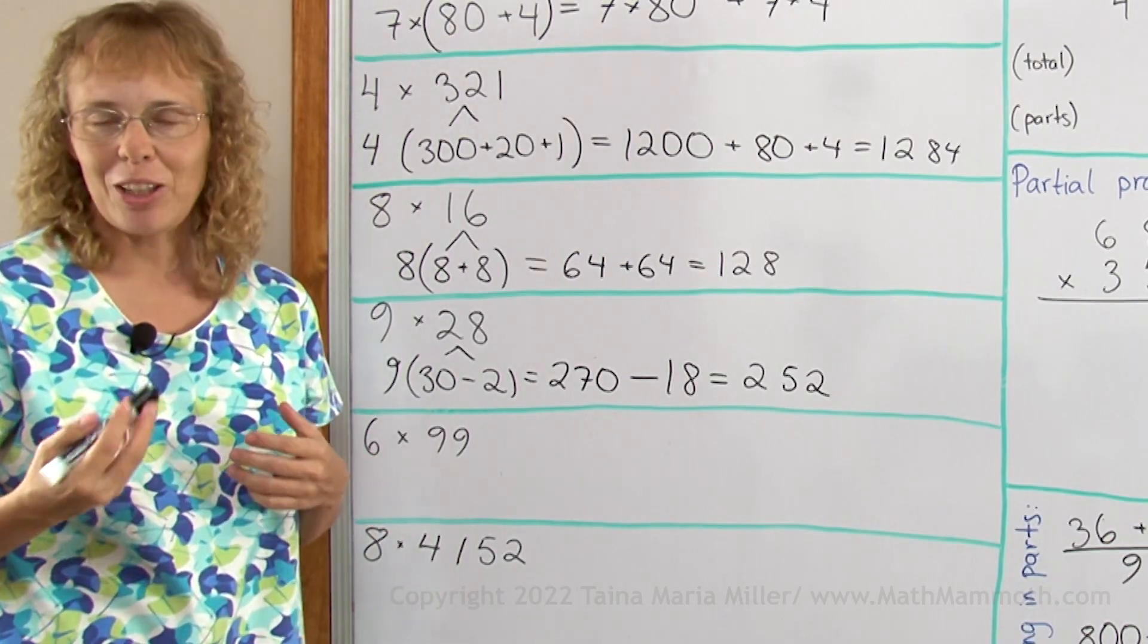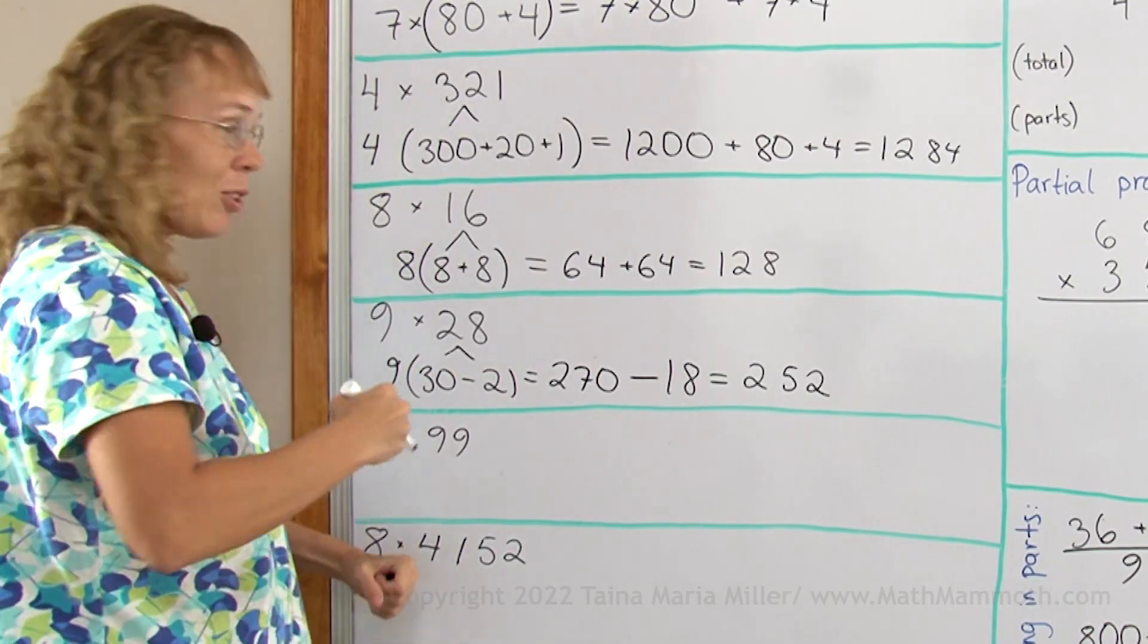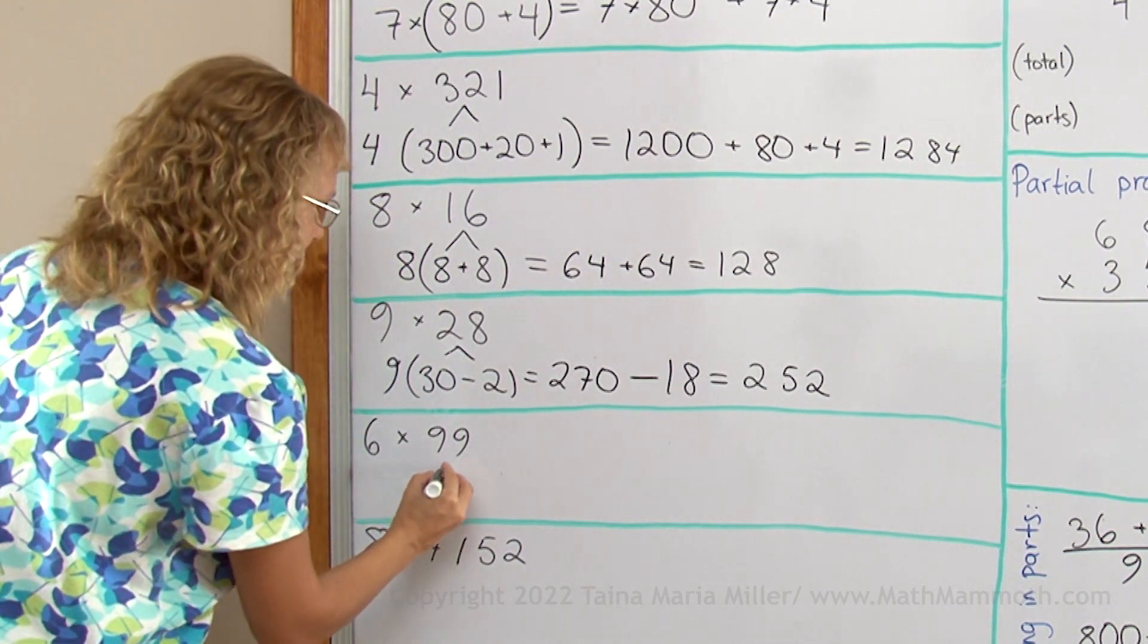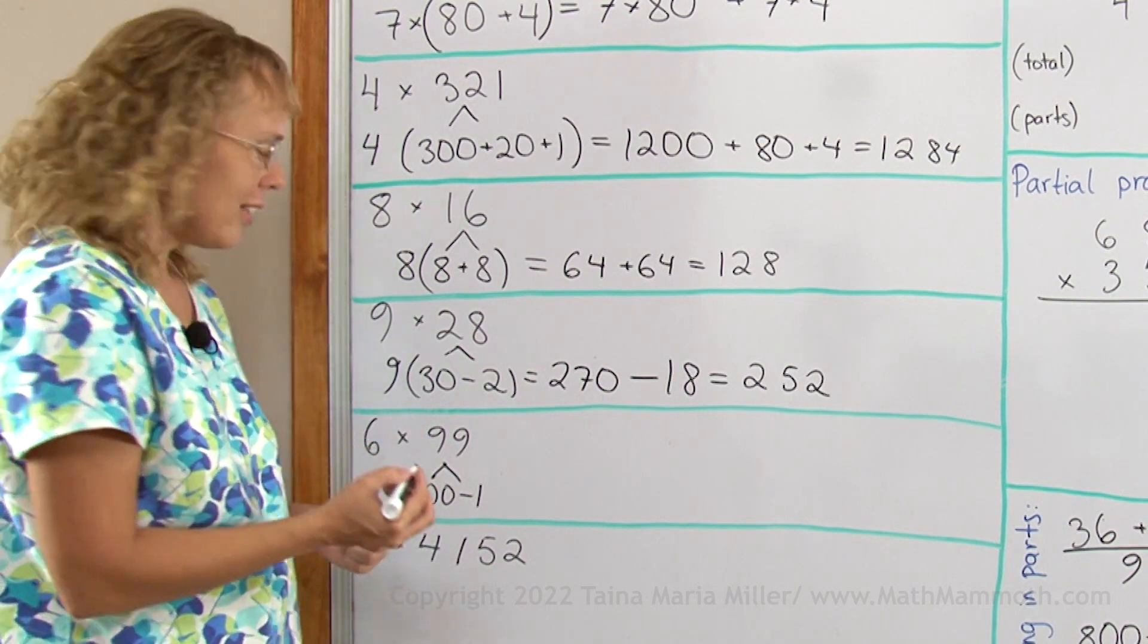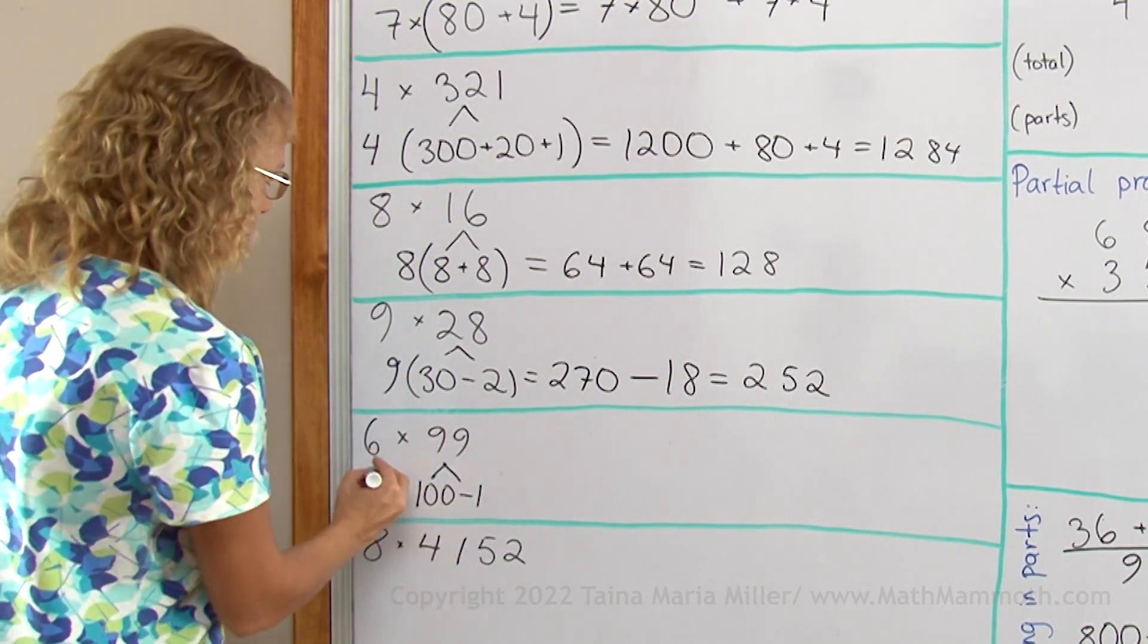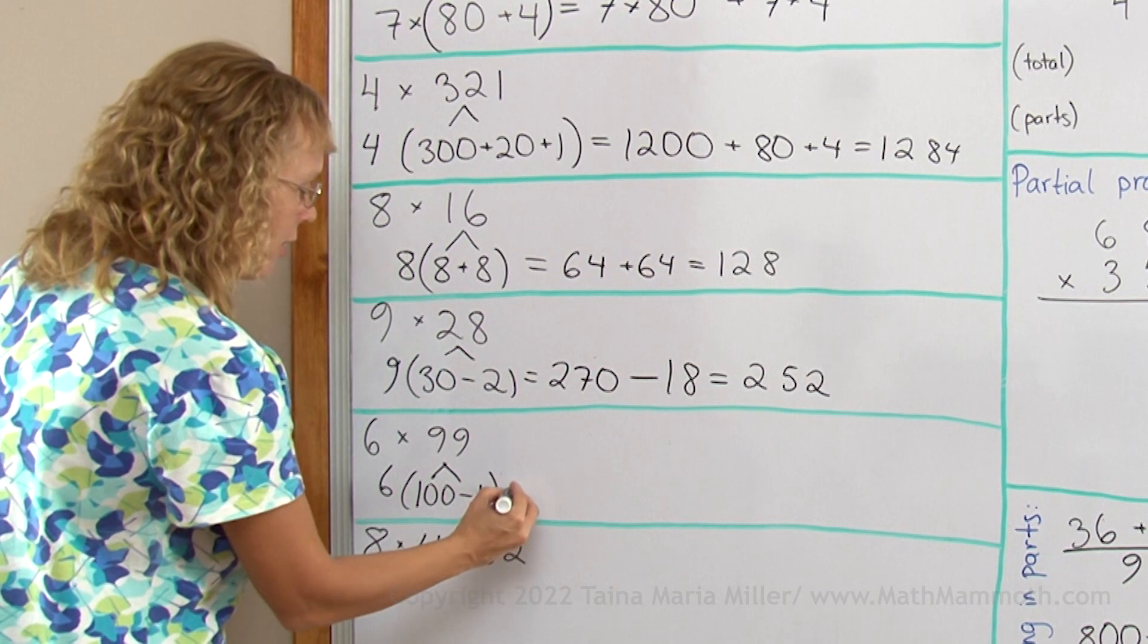6 times 99 might look like a difficult problem to multiply in your head, but if you just write 99 as 100 minus 1, then it's not that difficult at all.